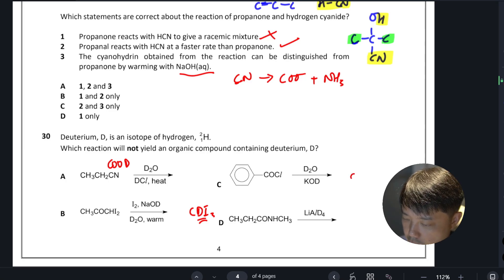...be our answer because you get EOO minus carboxylic ion plus ACl, right, which is inorganic and doesn't contain the deuterium. Okay, so our answer here is C. Just to check for D...